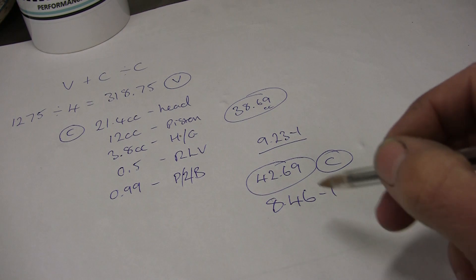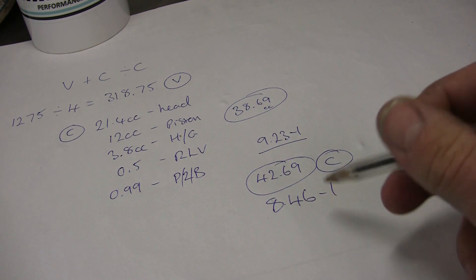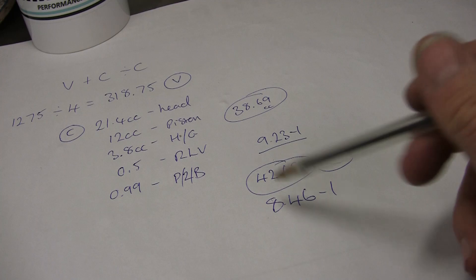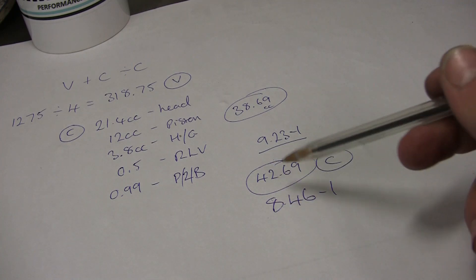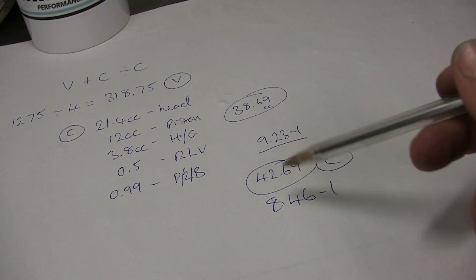Dead easy to work out. You can obviously put different volumes in. If you wanted to take the head out to 28 cc, that's going to make a huge difference. Dead easy.